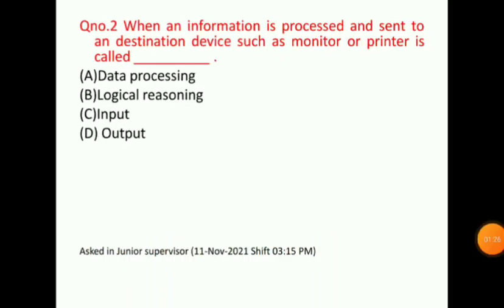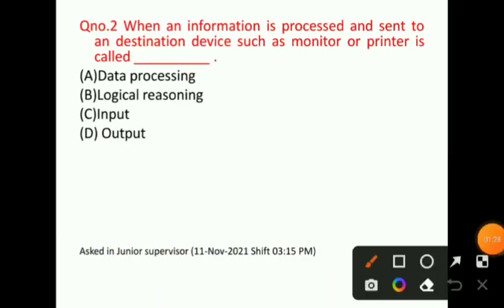Let's talk about question number 2. When information is processed and sent to a destination device such as a monitor or printer, it is called — the correct answer for question number 2 will be option D, that is, output.